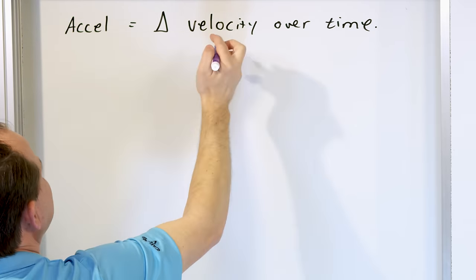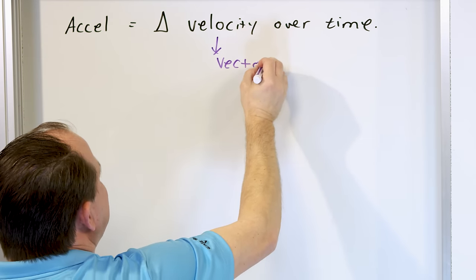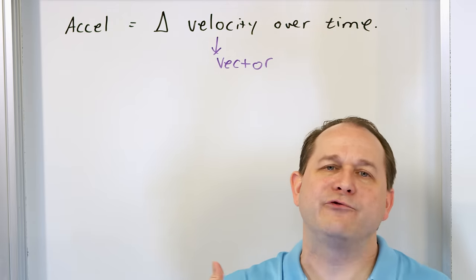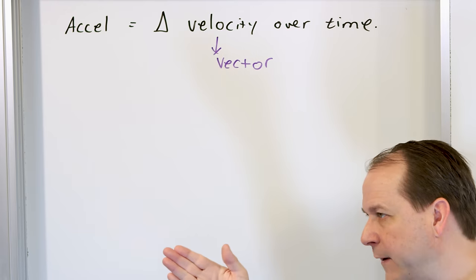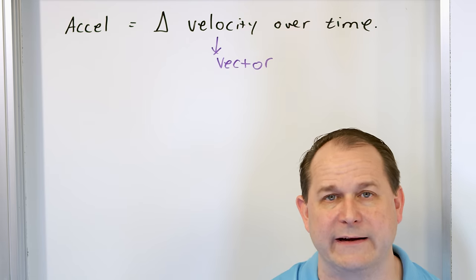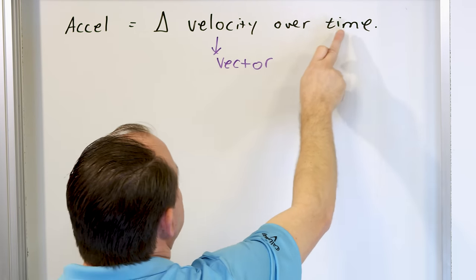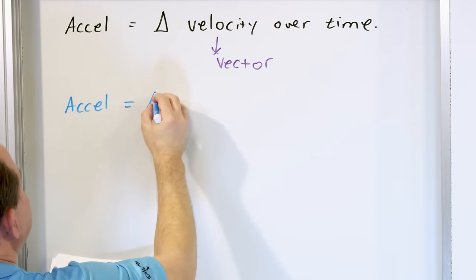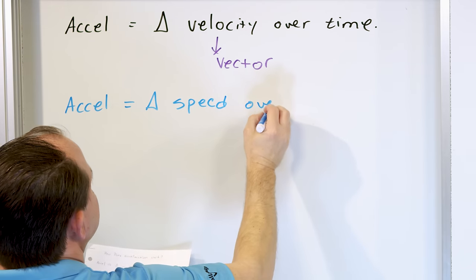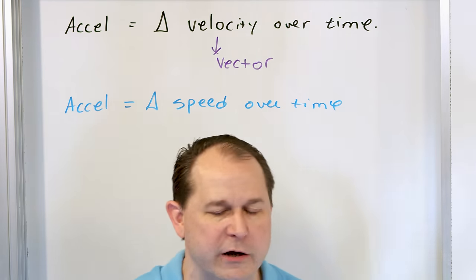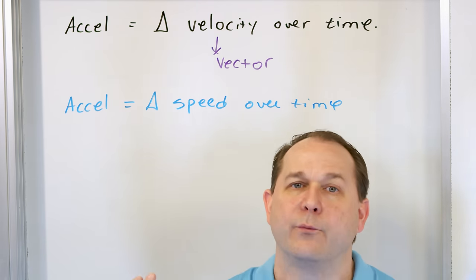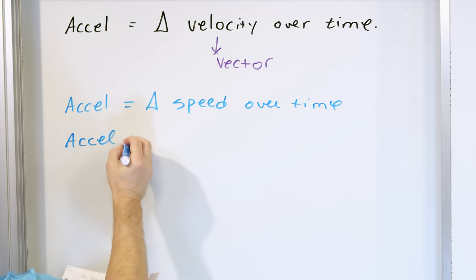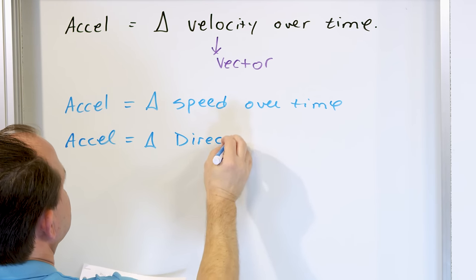Remember, velocity is a vector — a quantity that has a magnitude and a direction. When traveling at some velocity, you're going this direction at this speed. So if you need to change your velocity over some period of time, there are really two different options. An acceleration can be done by changing the speed over time — that's what we know. But you can also get an acceleration by changing the direction of motion over time. Velocity is not just a number; it's a number associated with some direction.